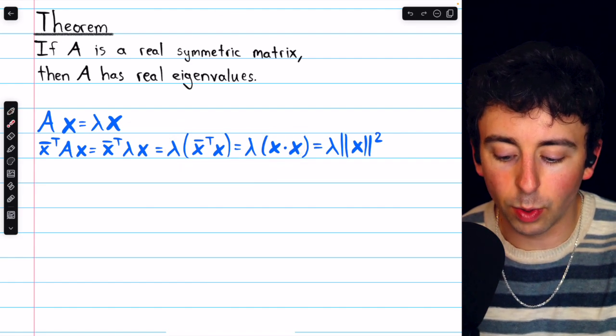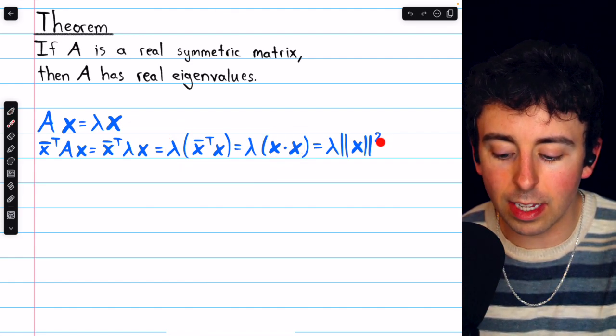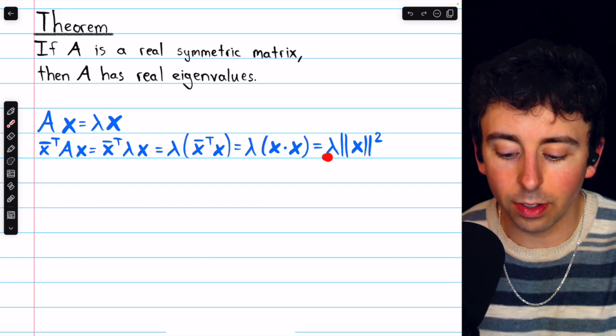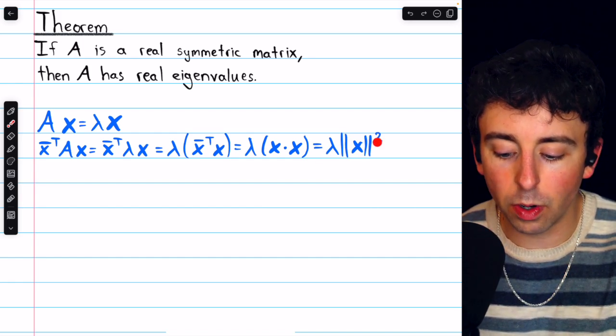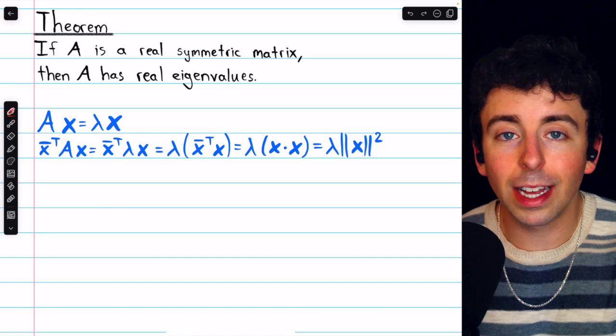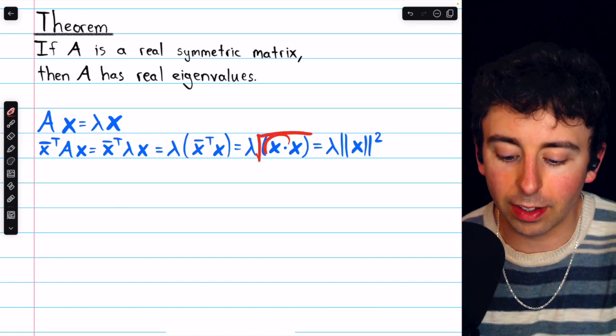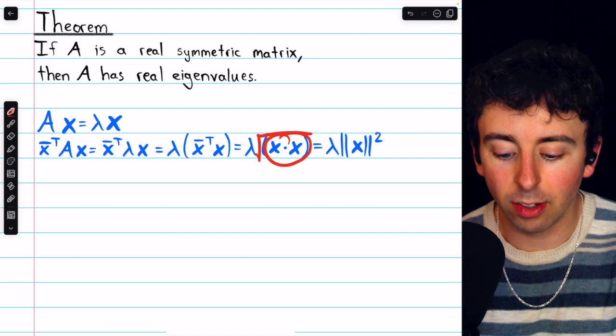Now the dot product of x with itself is the same as the square of the magnitude of x. So this equals lambda times the magnitude of x squared. Remember, that's because the magnitude of a vector x is the square root of its dot product with itself. So without the square root, it's just the square of the magnitude.